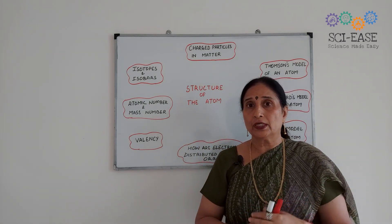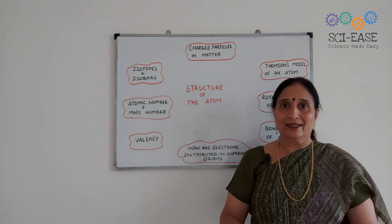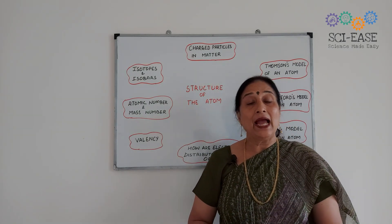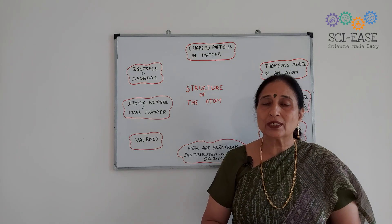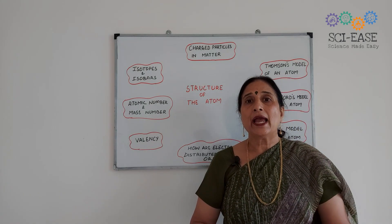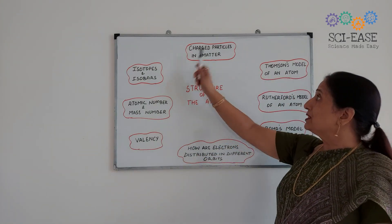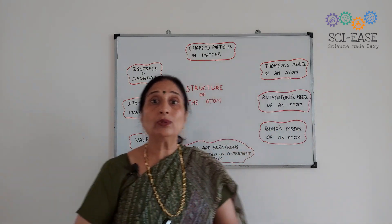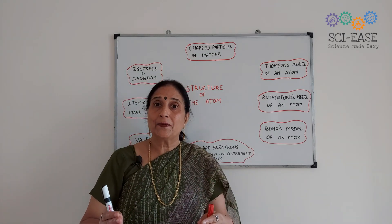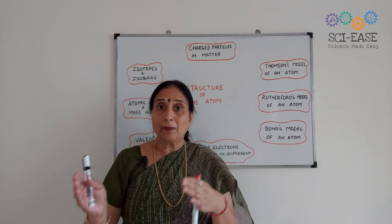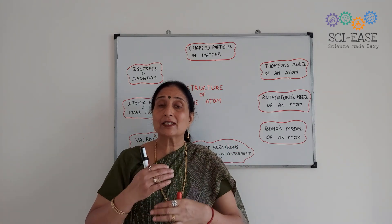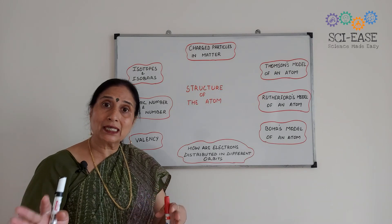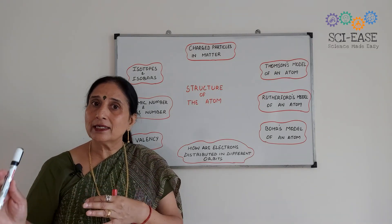Later on it was proved that atom is divisible and it has subatomic particles present in it. These particles are positively charged protons, negatively charged electrons, and neutral neutrons. In the first topic we will study about the charged particles in matter — how the scientists discovered these subatomic particles and what experiments they performed to discover them.